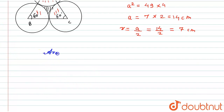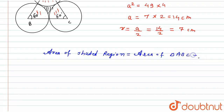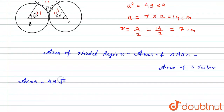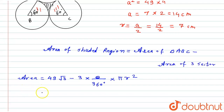The area of the shaded region equals the area of triangle ABC minus the area of the three sectors. Using the sector area formula, this becomes: 49√3 minus 3 × (θ/360) × πr². Since each angle of an equilateral triangle is 60°, θ = 60°.